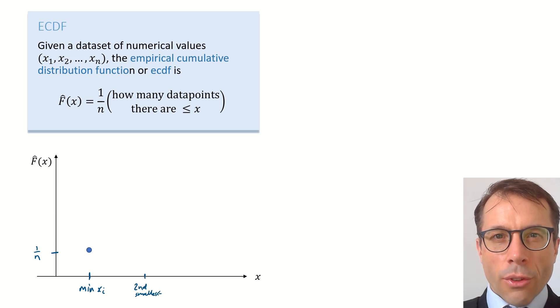How about when x equals the second smallest value in the dataset? Same as before. Now, there are two points that are less than or equal to x, and so on, for the third smallest.